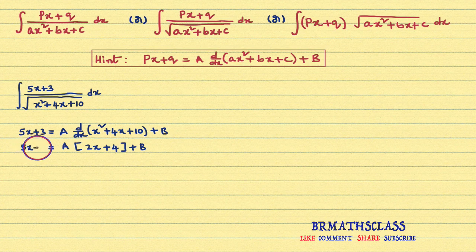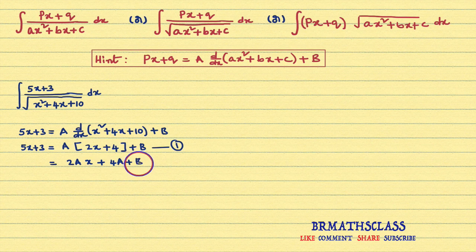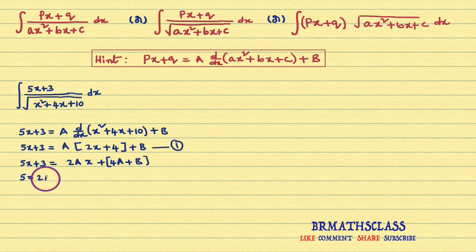This side is 5X plus 3. Our first target is to find the values of A and B. I will multiply this whole expression by A, and what we get is 2AX plus 4A plus B. We can observe that 4A plus B is the constant part of the right-hand side. To find the values of A and B, I will compare the coefficients. The X coefficient on the left is 5, and the X coefficient on the right is 2A. So, A equals 5 divided by 2.